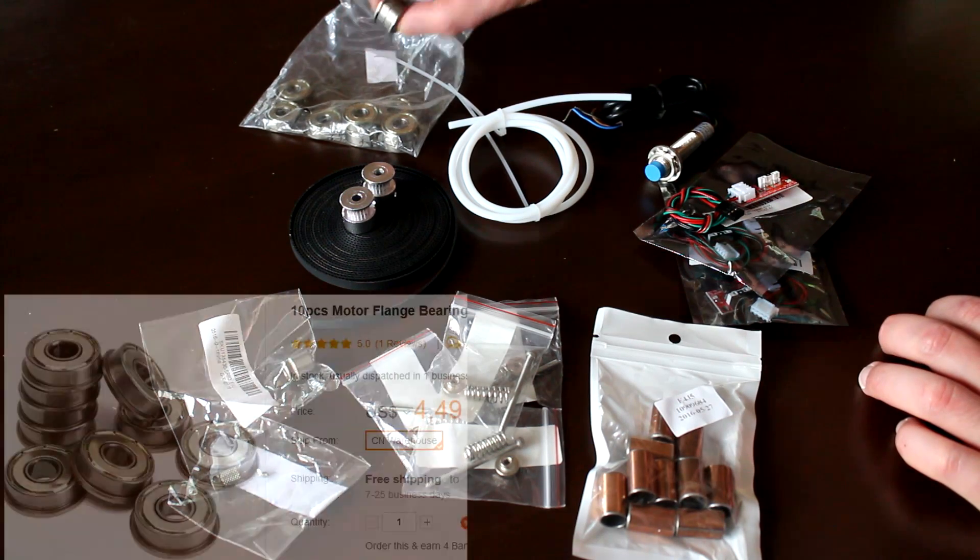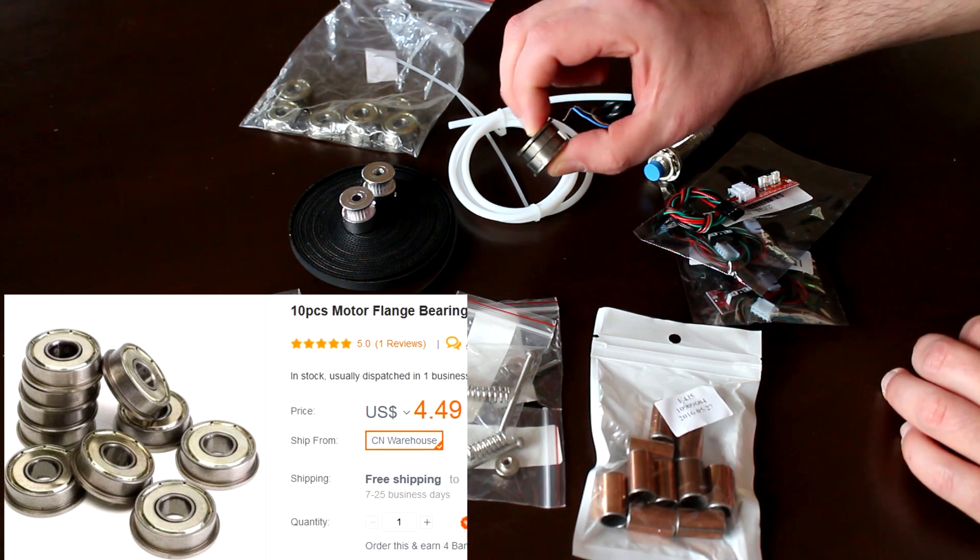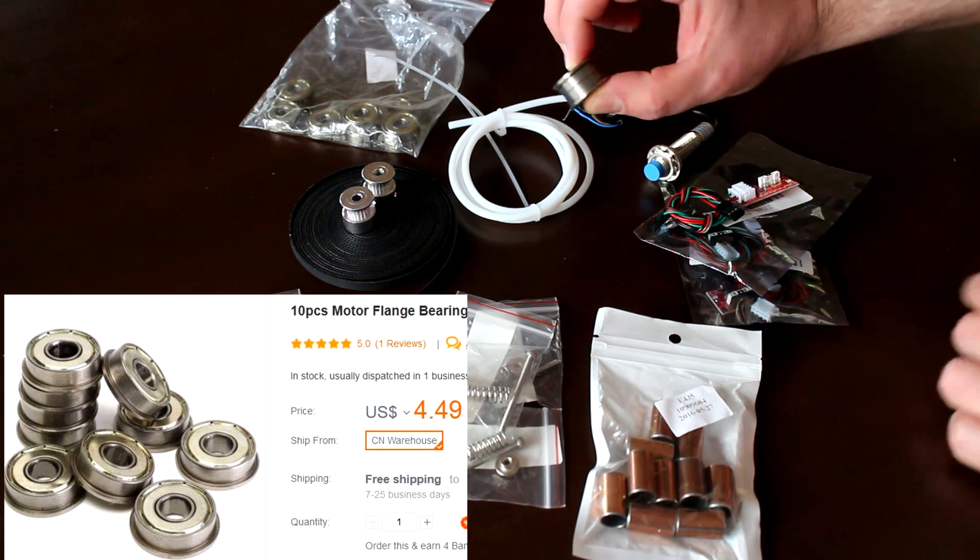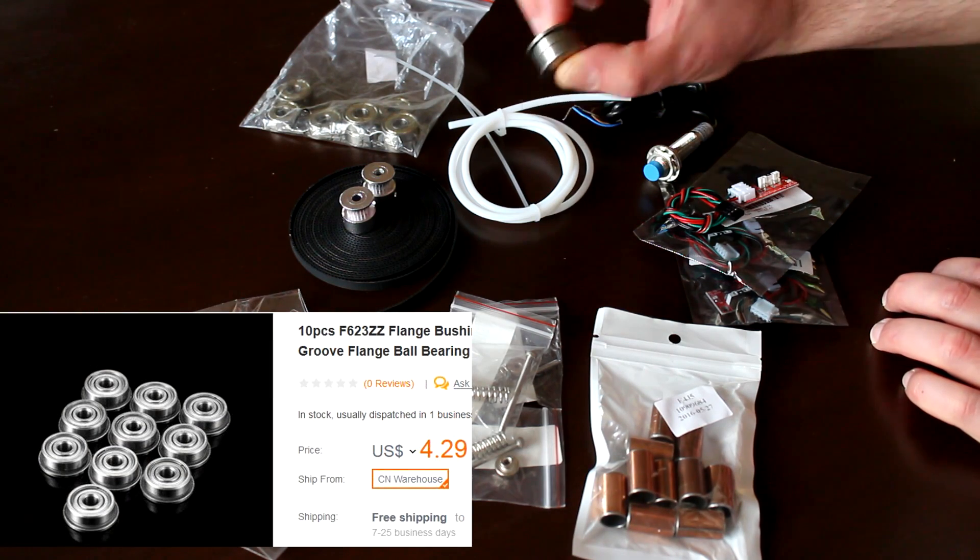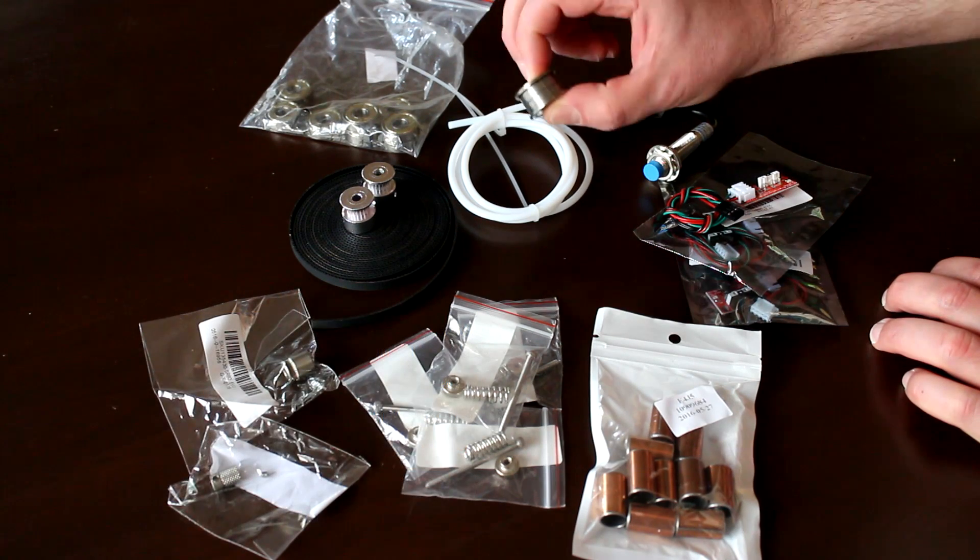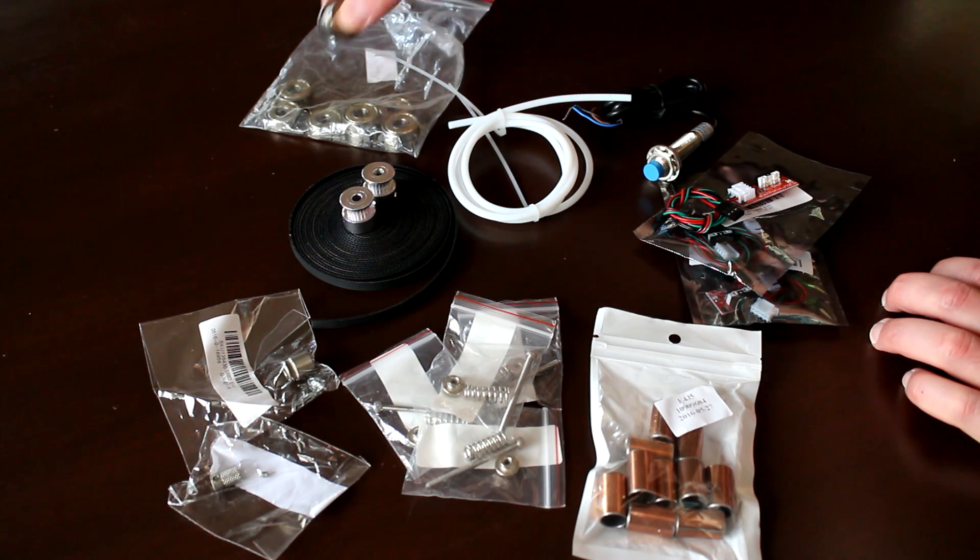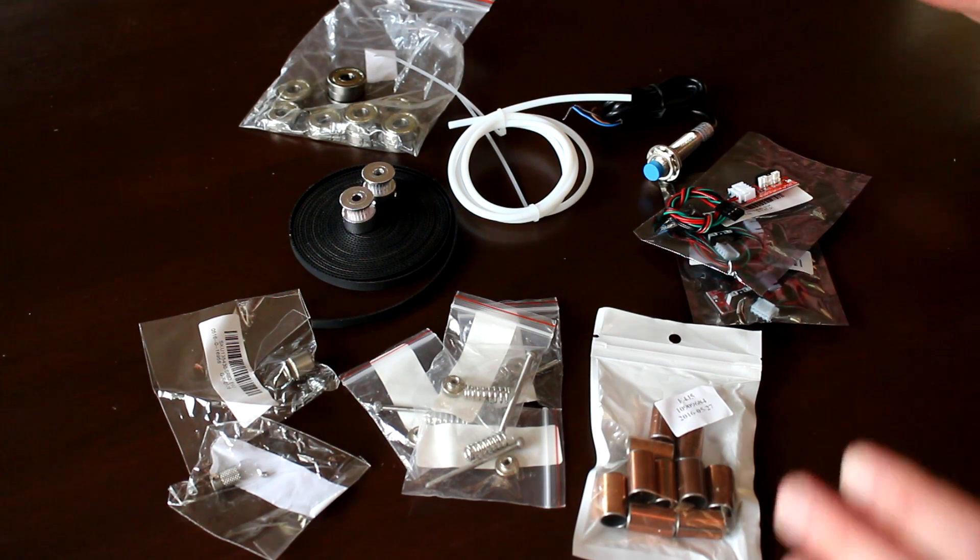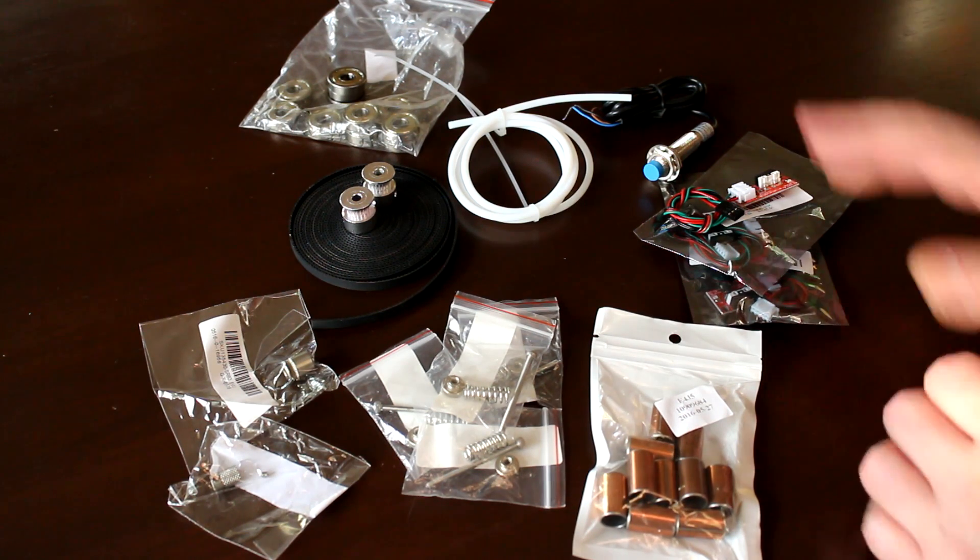And also for the belts, for the idler sides, I picked up some of these 608ZZ bearings with the flange. However, I made a mistake. I shouldn't have bought these. I should have bought the smaller bearings with the flange, the 623ZZ. So I've ordered some 623ZZ bearings from Banggood. They're in the mail. They'll hopefully be here next week. That will hopefully then allow me to actually assemble the frame and test out the X and Y drive system.